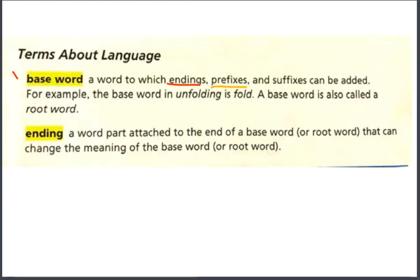Today we are just focusing on endings. A base word is a word to which endings, prefixes, and suffixes can be added. For example, the base word in 'unfolding' is 'fold.' A base word is also called a root word. Our next term is ending — a word part attached to the end of a base word or root word that can change the meaning of the base word or root word. The ending can change the meaning of the base or root word, and that will be very important.